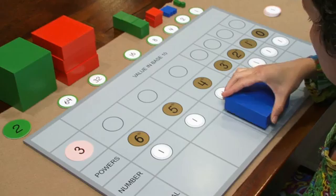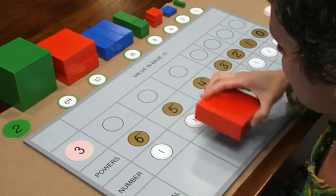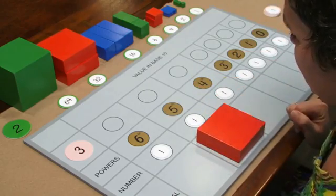1, 2, 3. I'll exchange these for the larger red flat rectangular prism, which shows our next highest value.